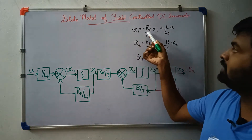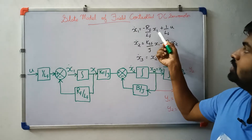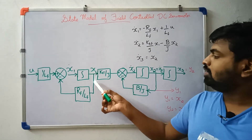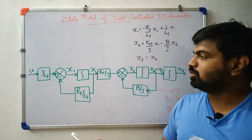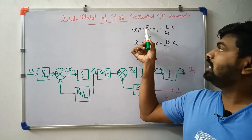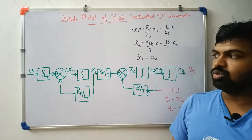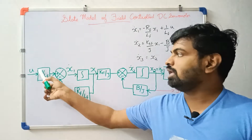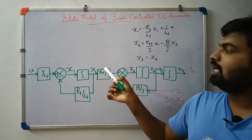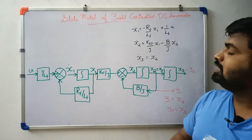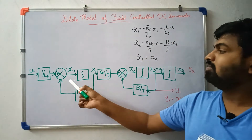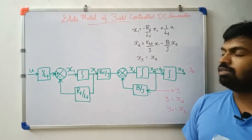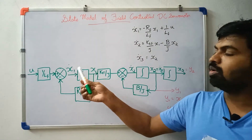So x1_dot = −(Rf/Lf)·x1 + (1/Lf)·u. We have Rf/Lf as the feedback term and 1/Lf as the input gain, so u is multiplied by 1/Lf. That is the first equation, and we will have the block diagram.